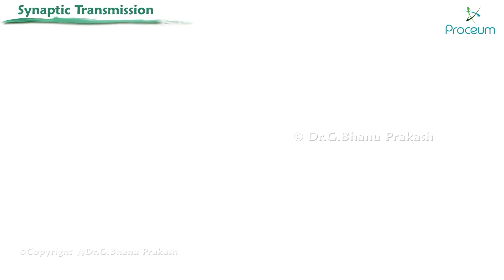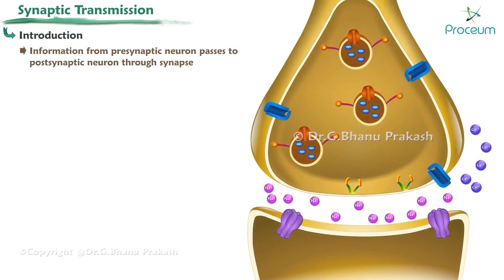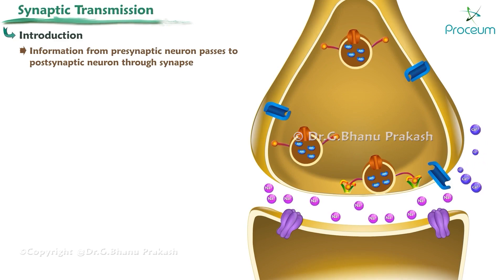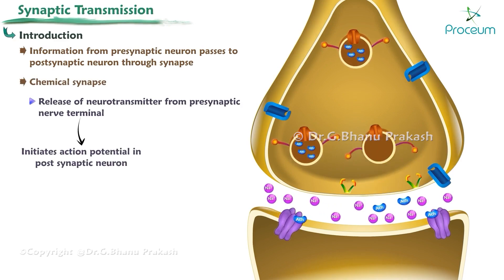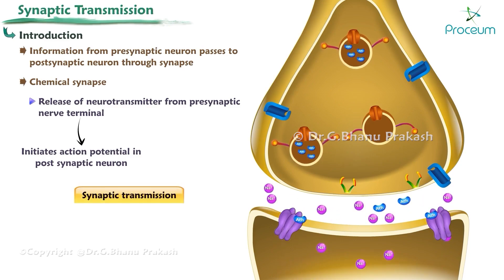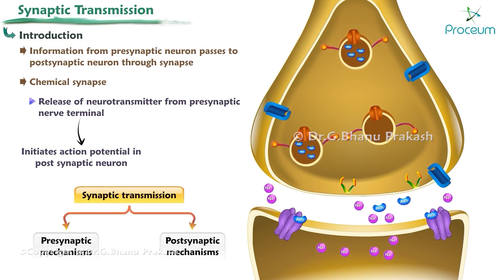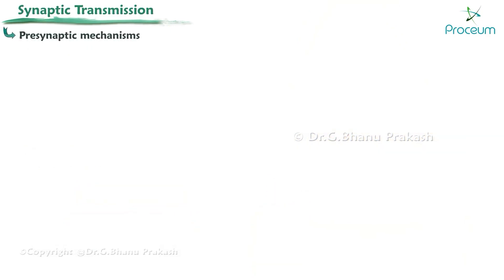Synaptic transmission is the process by which information from a presynaptic neuron passes to the postsynaptic neuron through a synapse. In a chemical synapse, it occurs due to release of neurotransmitter from the presynaptic nerve terminal that initiates an action potential in the postsynaptic neuron. The mechanism can be divided into presynaptic mechanisms and postsynaptic mechanisms.